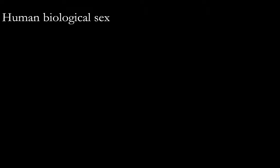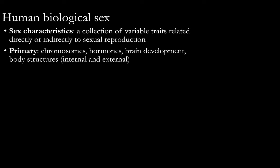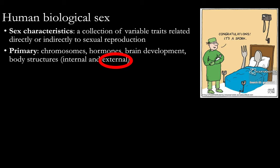When it comes to human biological sex, we need to be very careful and nuanced because of the many ways cultural understandings of sex and gender shape our views of human sex characteristics. I like to define human sex characteristics as a collection of variable traits related directly or indirectly to sexual reproduction. Primary sex characteristics include hormones, sex chromosomes, how the brain develops prenatally in response to those things, and internal and external body structures present at birth. Generally, human sex is designated at birth based only on the appearance of external sex characteristics, without considering in detail what other aspects of sex traits might be present.